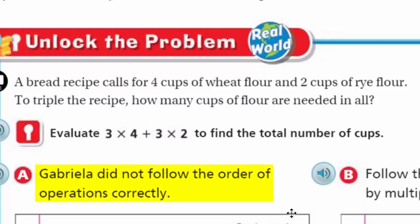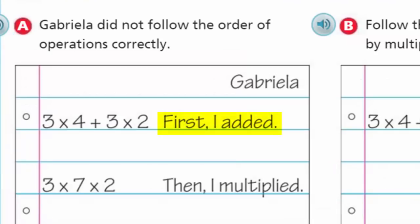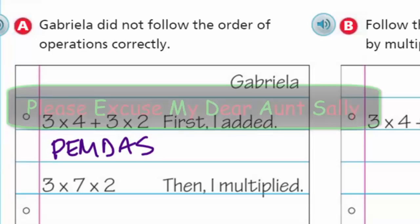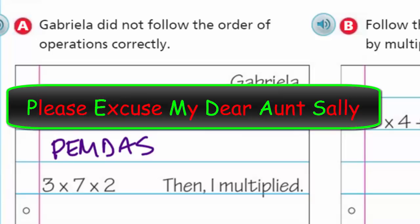Now it says Gabriela did not follow the order of operations correctly. Sorry, Gabriela. She added first. No, no, no — not good. Because our order of operations, and there's actually a sneaky way to remember it — some people say PEMDAS. We used to memorize it as 'Please Excuse My Dear Aunt Sally.' The P stands for parentheses. We don't have exponents here, then we have multiply, divide, add, and subtract. Remember — multiply and divide are equal priority, as are add and subtract, but multiply/divide outrank add/subtract.